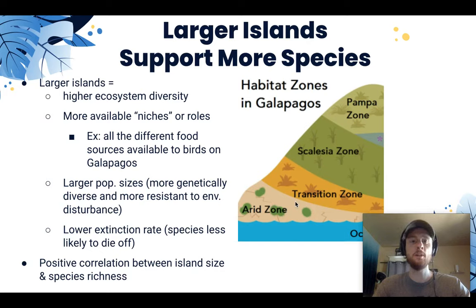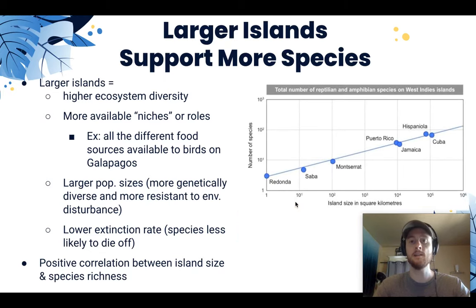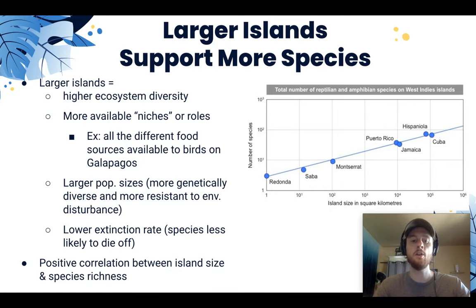Larger space also equals larger population size. As populations grow, they have more members, become more genetically diverse, and are therefore more resistant to disturbance. If there's a hurricane or a drought, larger populations enabled by larger islands make species less likely to go regionally extinct or disappear from the island. So there's a lower rate of extinction on larger islands, which keeps species richness higher. This is a positive correlation: as we increase island size in square kilometers on the x-axis, we also increase the number of species — a very linear, positive relationship.